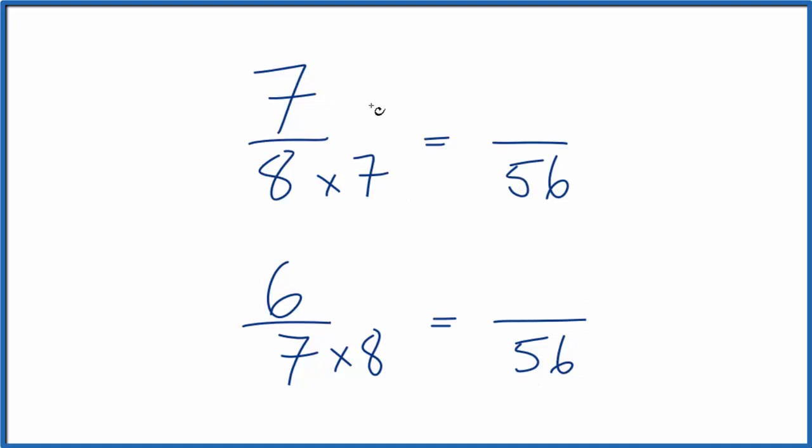But I can't just multiply by 7. I have to multiply by 7 over 7. That's because 7 over 7, that's 1. So I'm really just multiplying by 1. 7 times 7 is 49. 8 times 7 is 56. So 7 over 8, it's the same thing as 49 over 56.